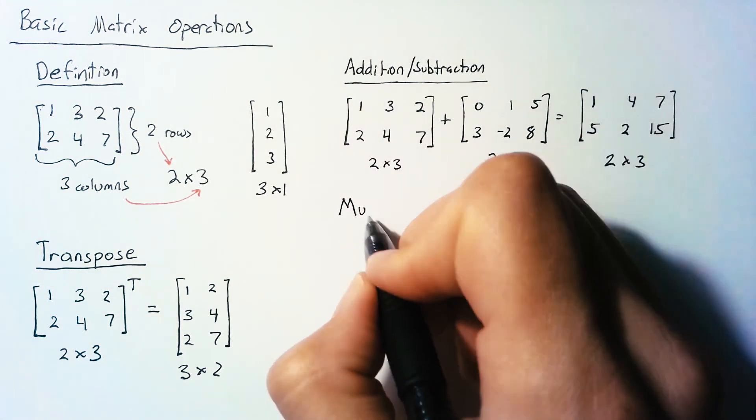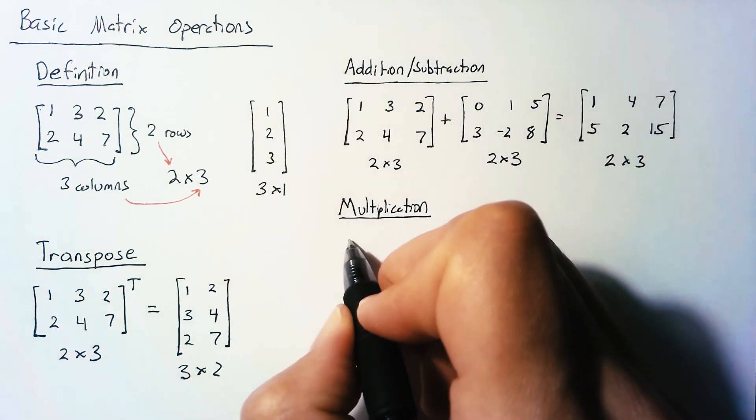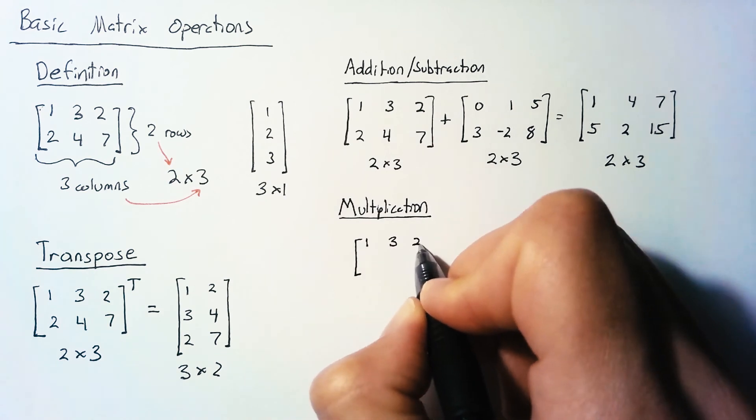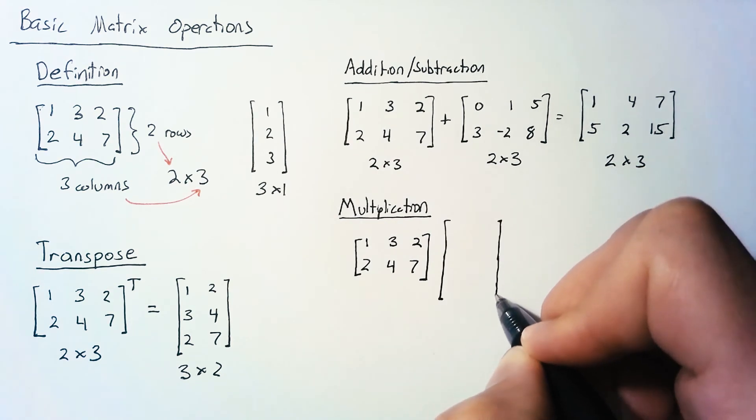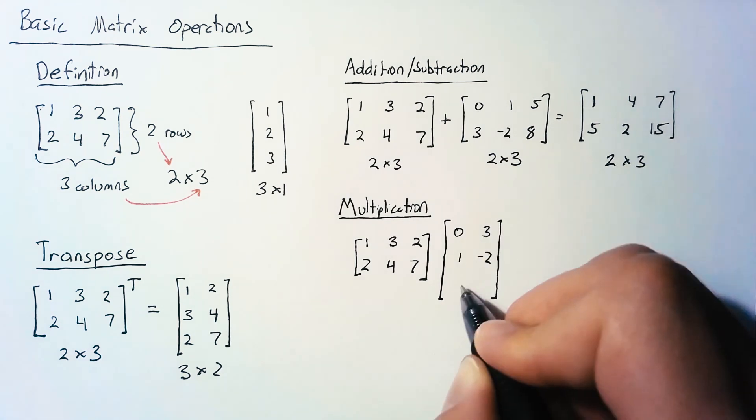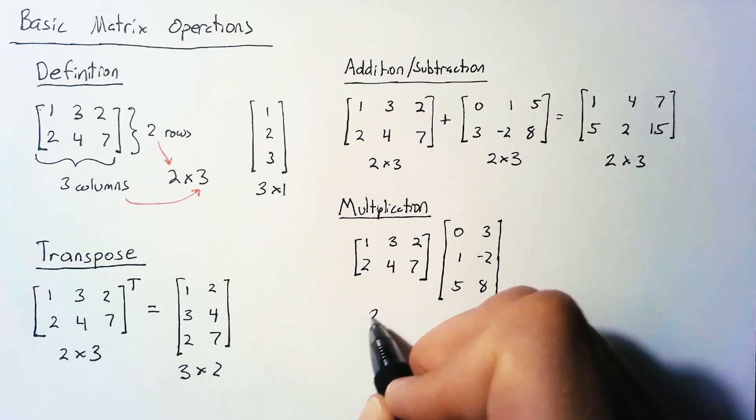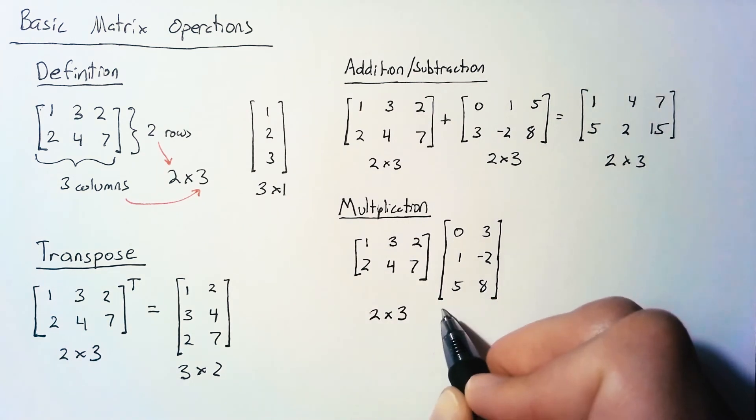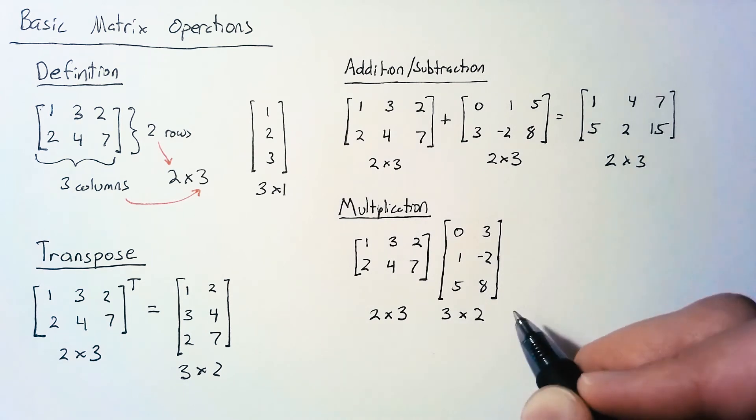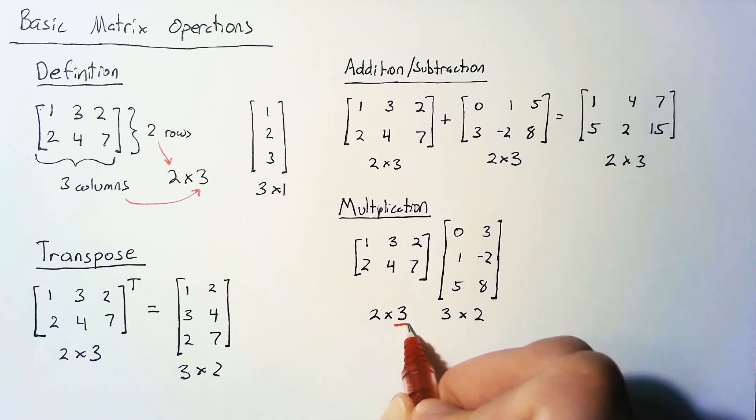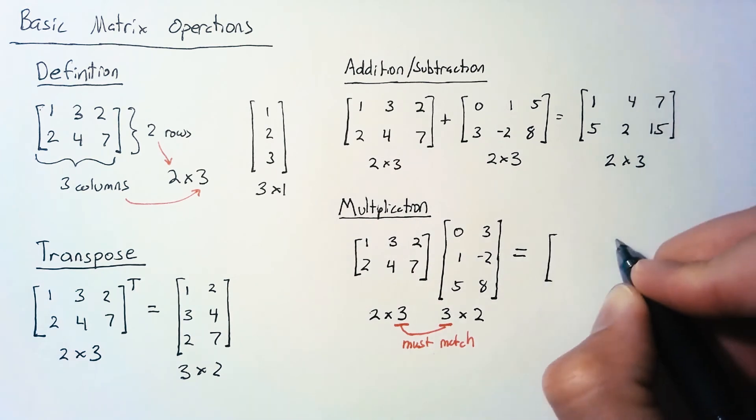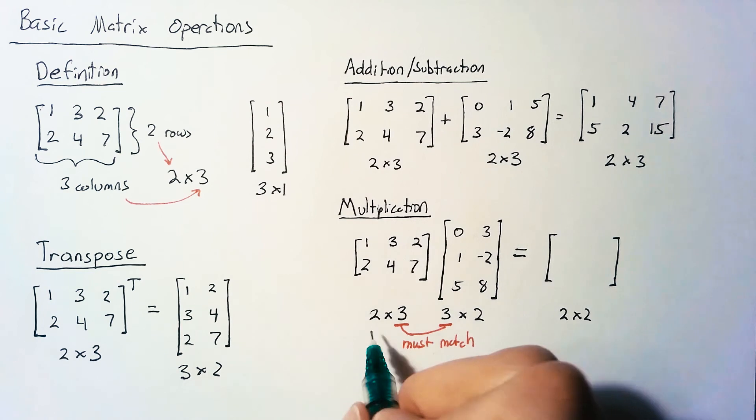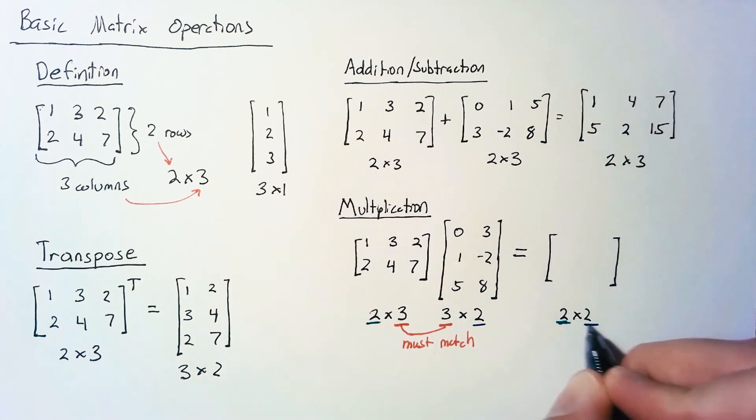Multiplication is the most important operation and has stronger rules. If we have a 2×3 matrix, we must match it with a 3×something matrix. The number of columns of the first matrix has to match the number of rows of the second matrix. What we end up with is a 2×2 matrix—whatever's left over from these two dimensions becomes the shape of the new matrix.